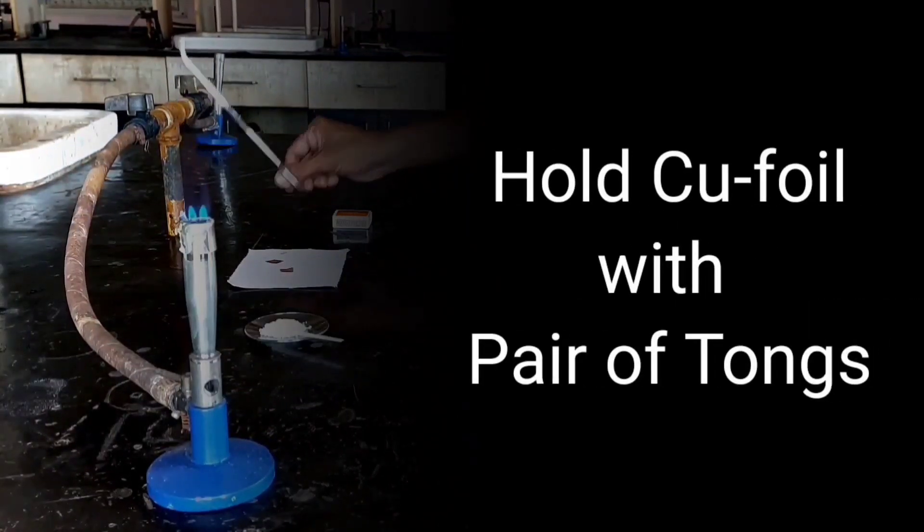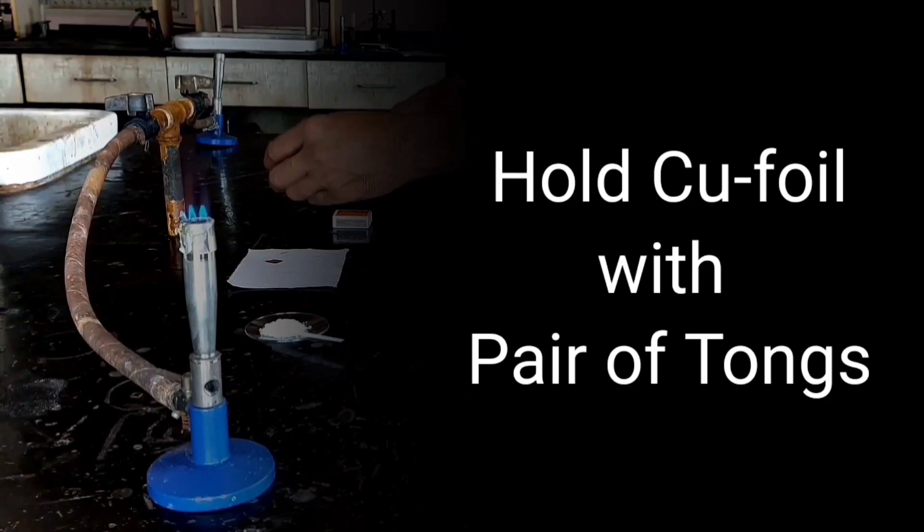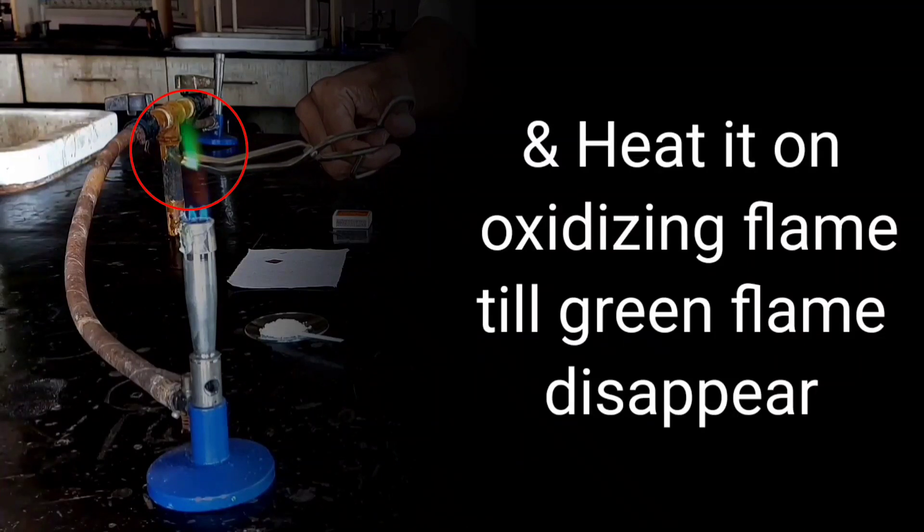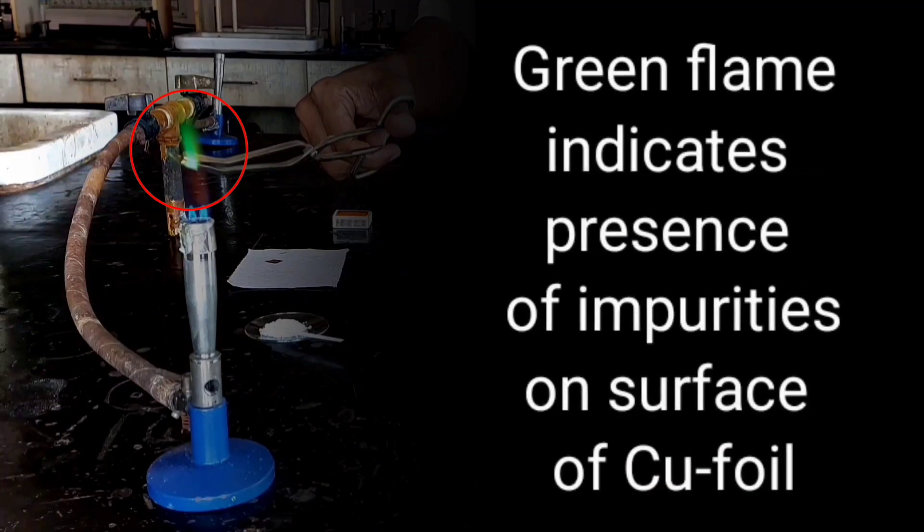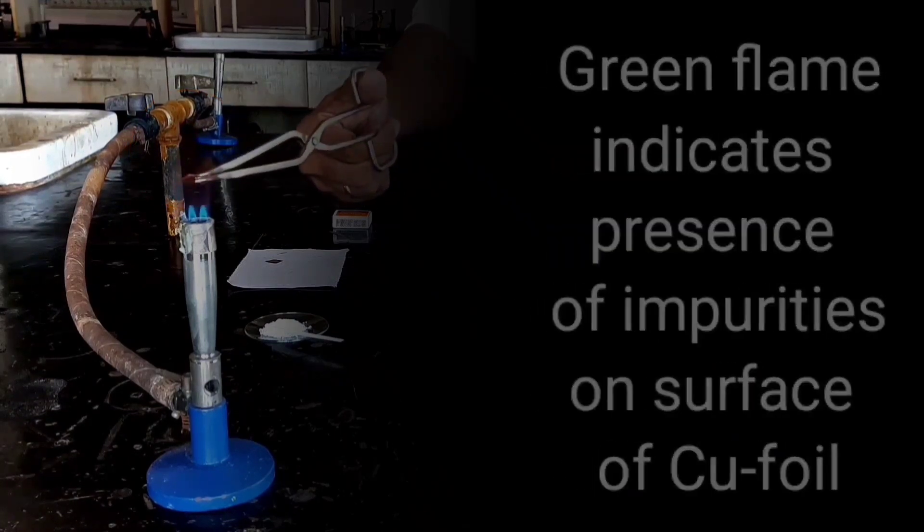Hold the copper foil with pair of tongs and heat it on oxidizing flame till green flame disappears. Green flame indicates presence of impurities on the surface of copper foil.